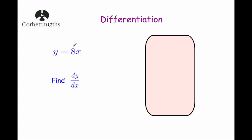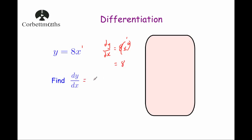Our next question: y equals 8x. Remember, dy by dx is the gradient function — it lets us find the gradient at any particular point. From GCSE, you should recognize y equals 8x is in the form y equals mx plus c, so it's a straight line with a gradient of 8. Differentiating: that's 8x to the power of 1, so 8 times 1 is 8, and x to the power of 0 equals 1, so dy by dx equals 8. So if y equals 8x, dy by dx equals 8. Similarly, if y equals 4x, dy by dx equals 4. If y equals x, dy by dx equals 1.